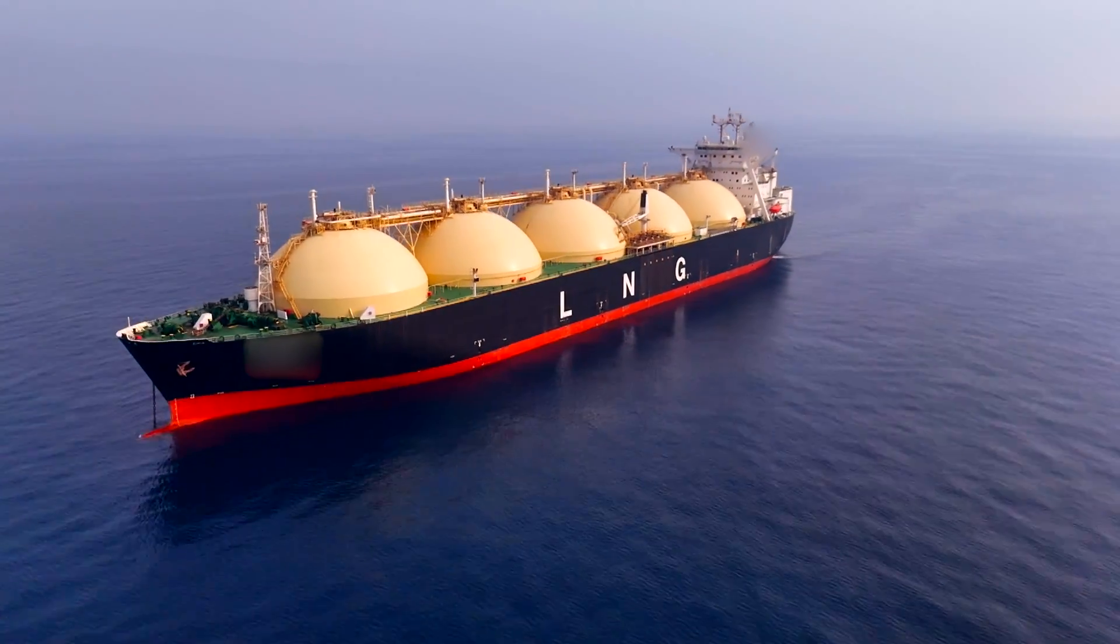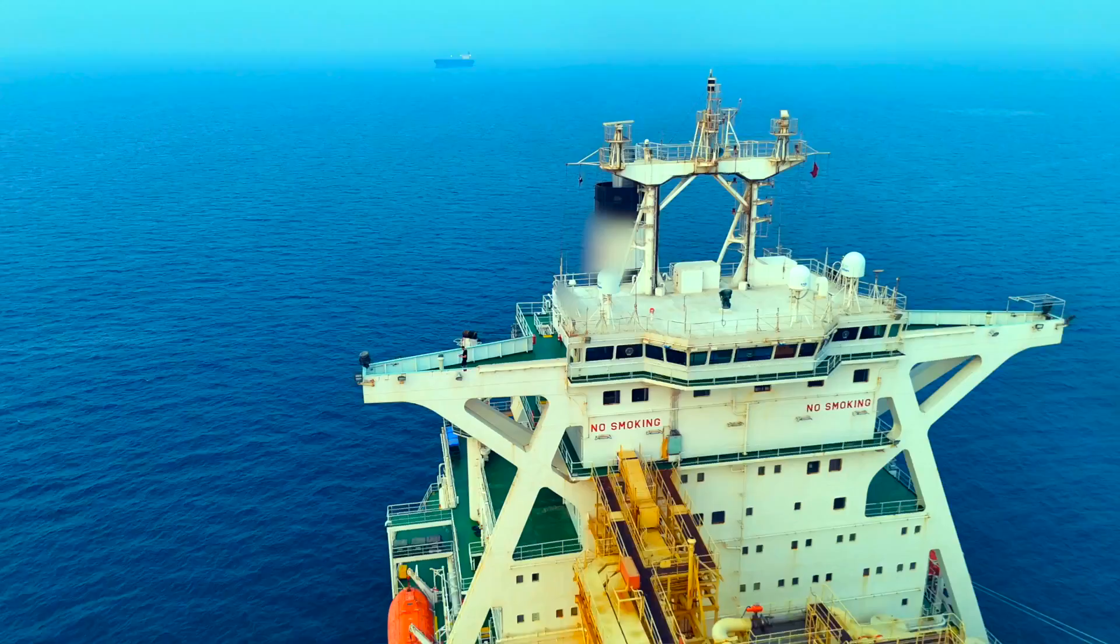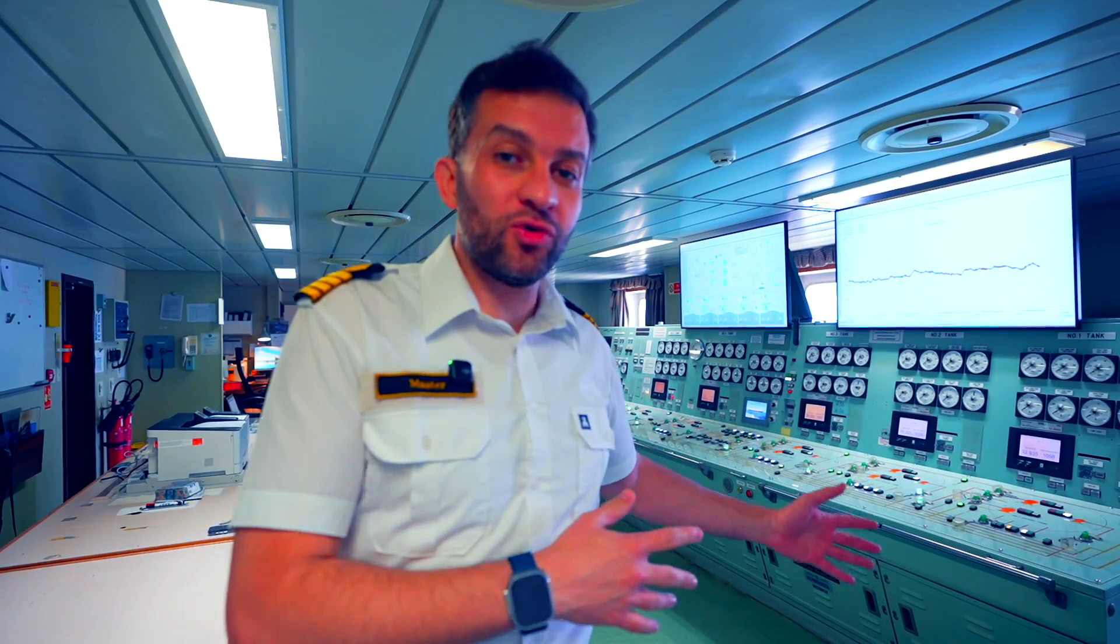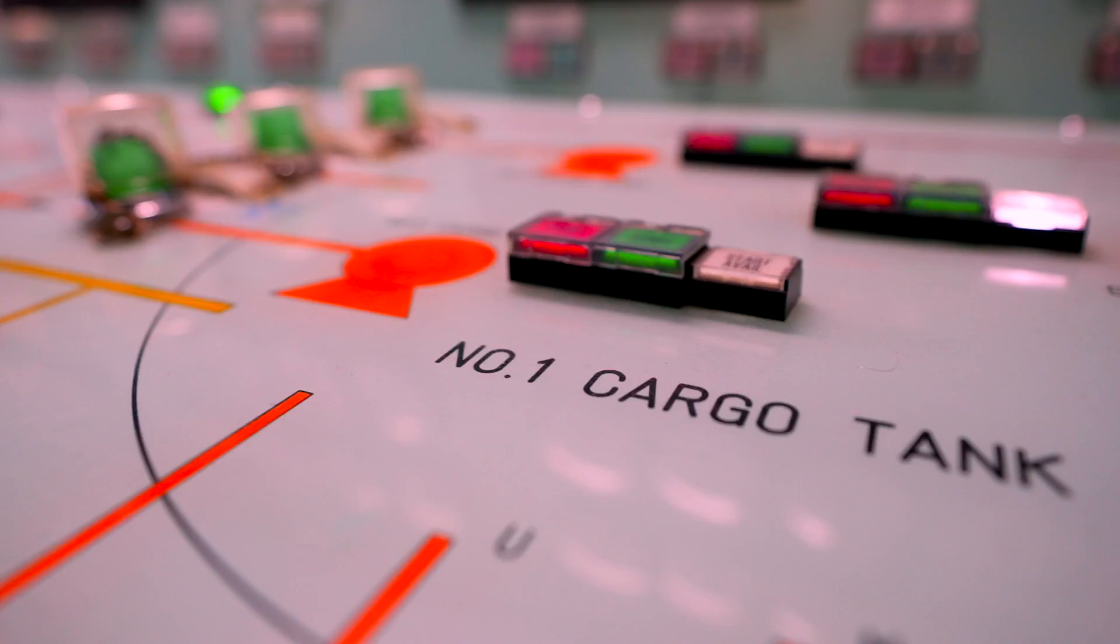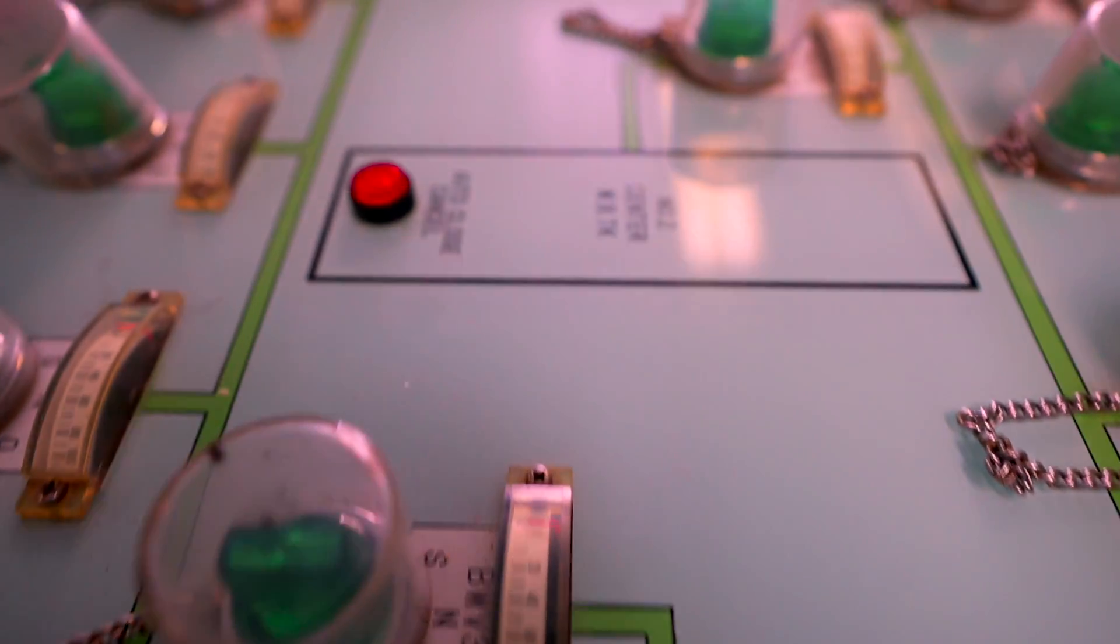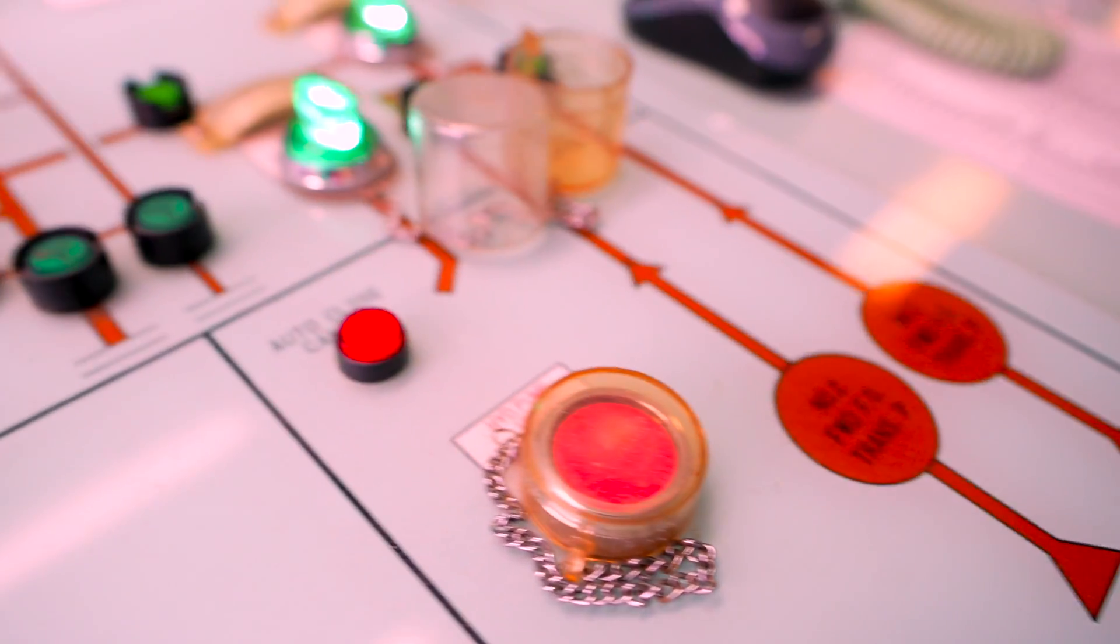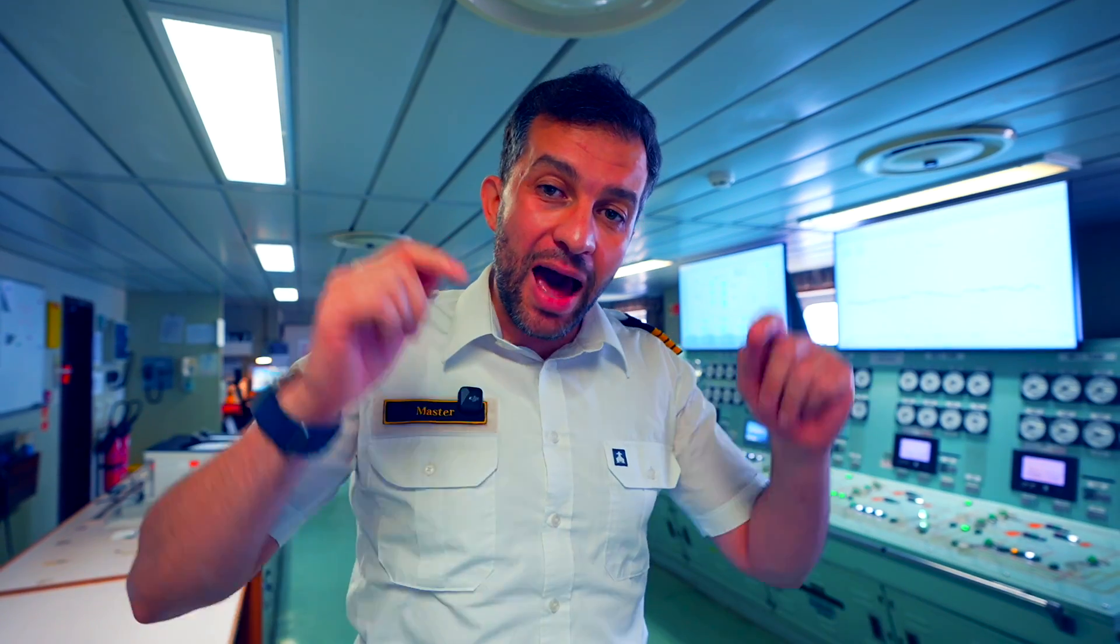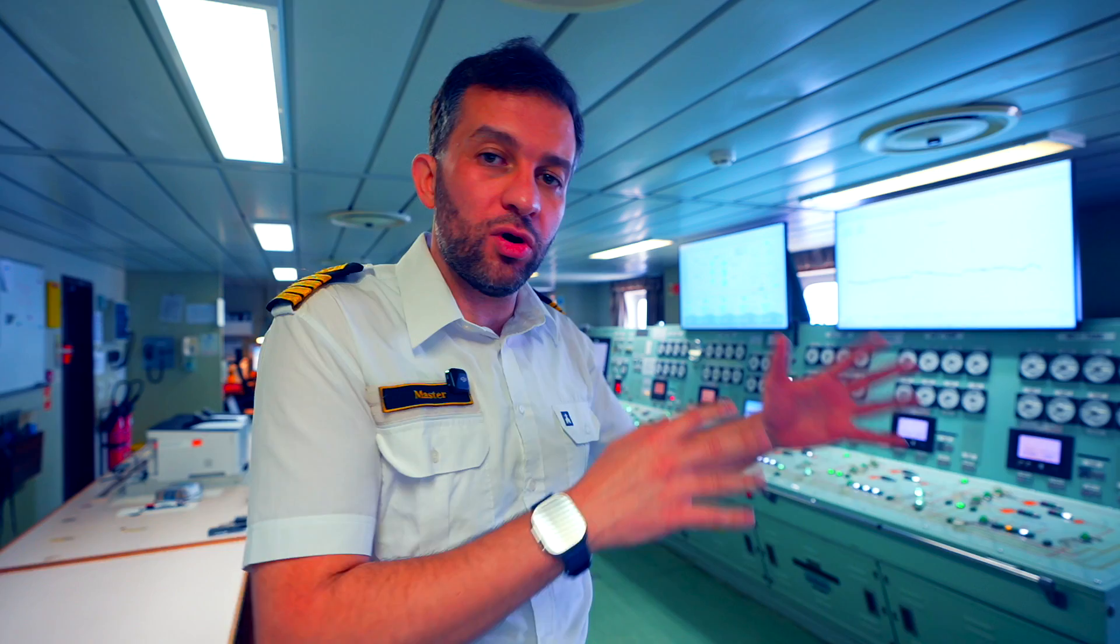This ship carries liquefied natural gas inside these spherical tanks. This is the bridge and this is the cargo control room or CCR where all operations - cargo loading, discharging, ballasting, deballasting, cargo planning, bunkering, cargo measurements, gas management - all these operations happen in this area. And in this video we cover all the panels and consoles related to these operations.